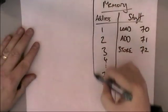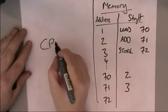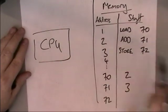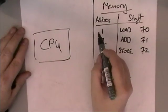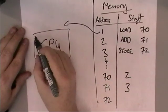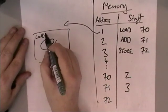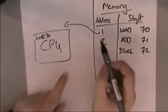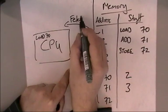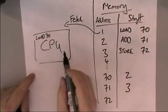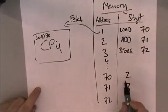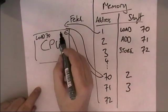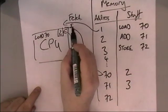What the processor does — the CPU — is it fetches the first instruction. It comes along, grabs the first instruction, and fetches it into the processor. So we've got: load the number from address 70. And address 70 contains the number 2. So we fetch, and then we execute. The execute step is to go and get that number and store it — we bring it back and write it down.